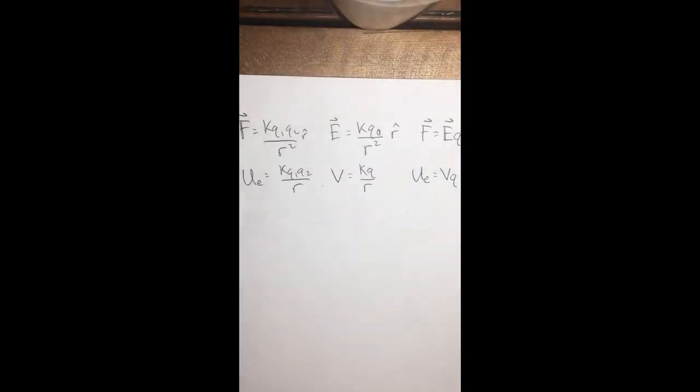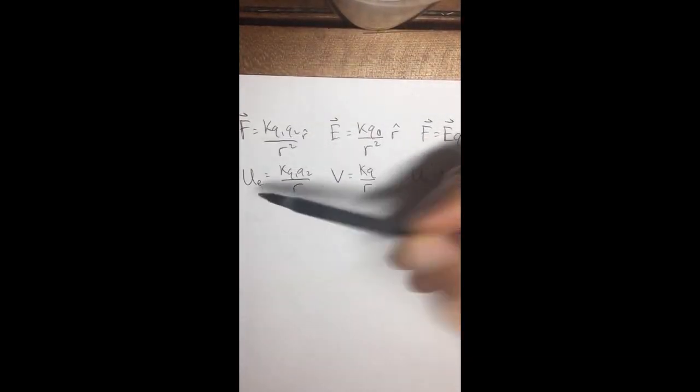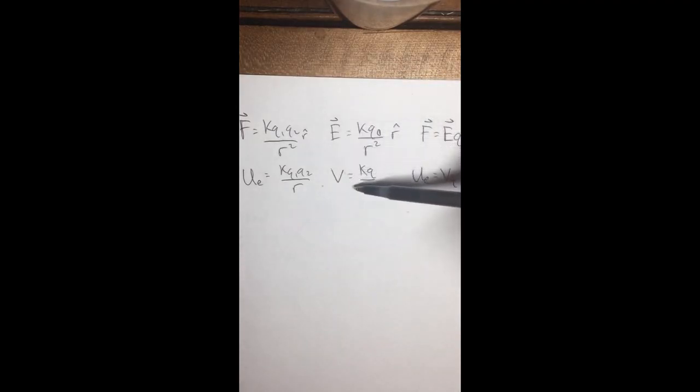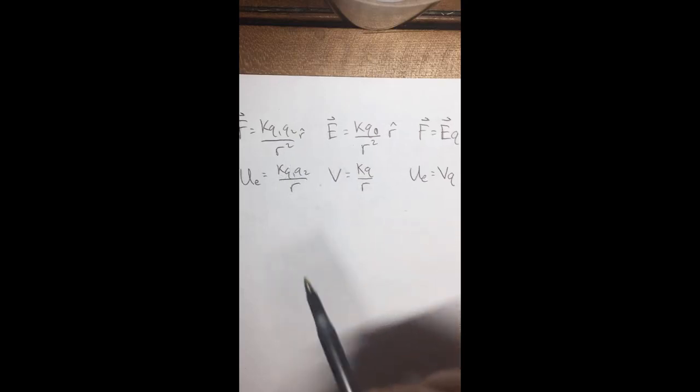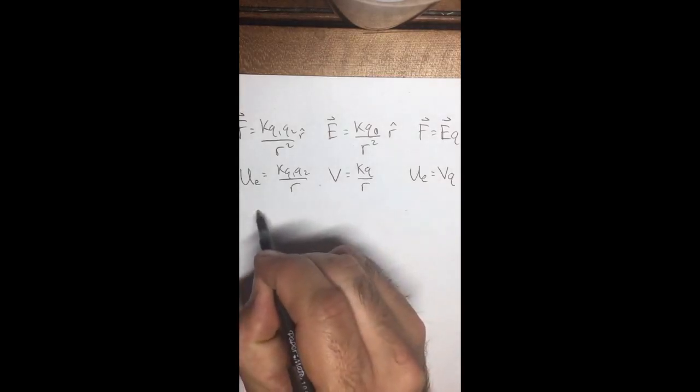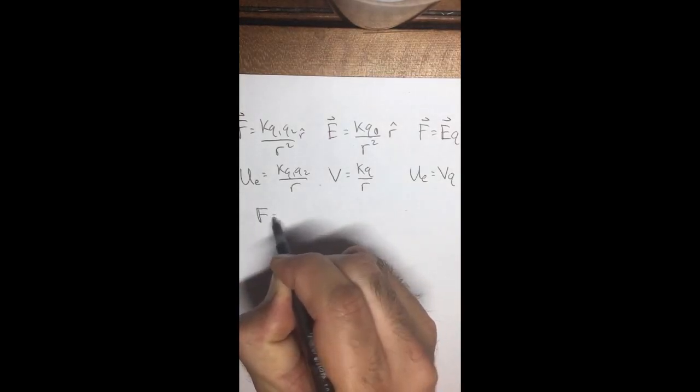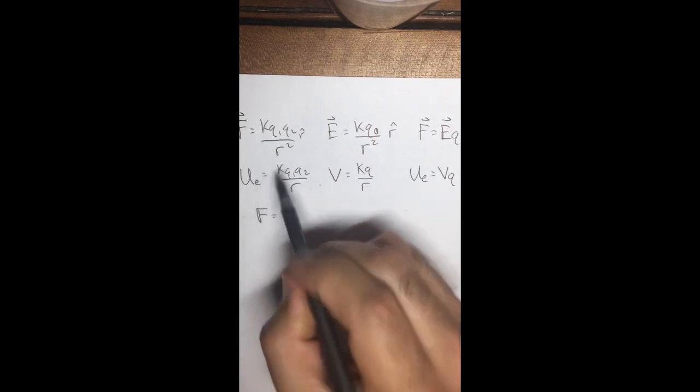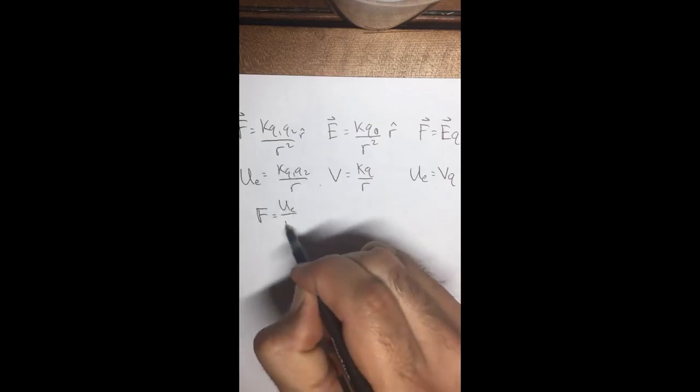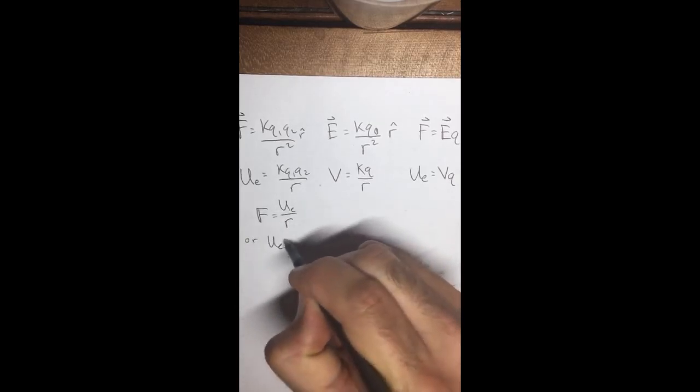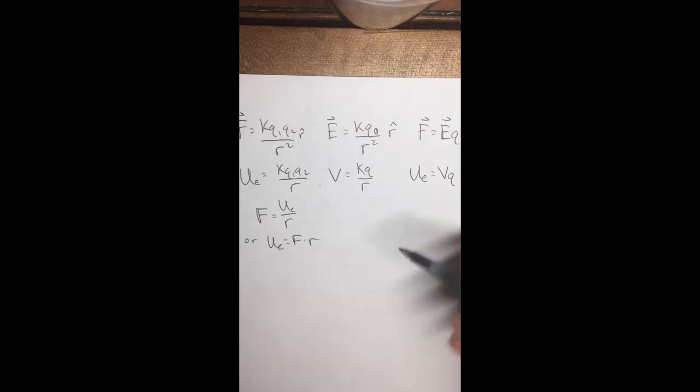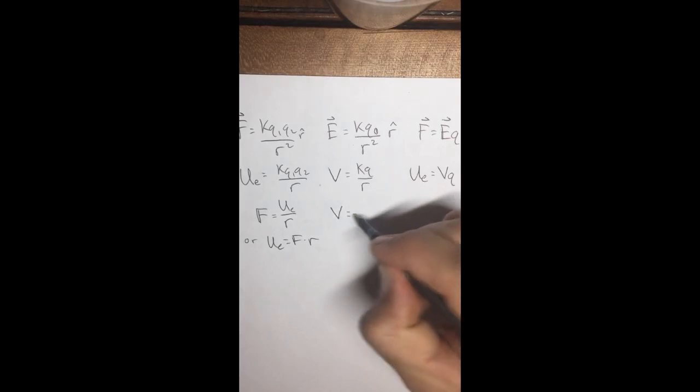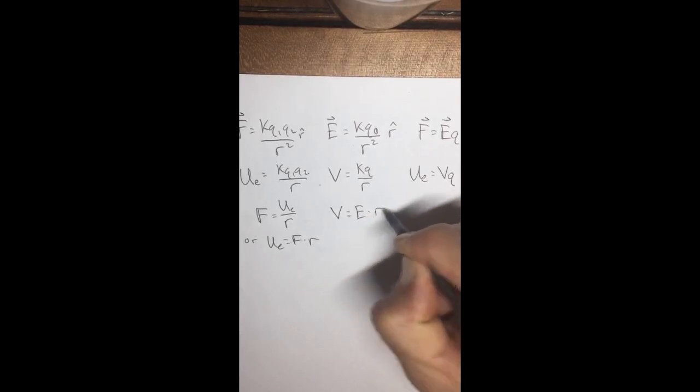Finally, how do we relate force to potential energy and electric field to electric potential? You'll notice here we've got K Q, K Q, R squared, R. Same kind of deal here. K Q1 K Q2, K Q1 K Q2. And we've got R squared and R. So we'll see here that F is like UE divided by another R, or UE equals FR. And look, that has the same kind of format as work, force times displacement. Now likewise, our electric potential is going to be electric field times R.